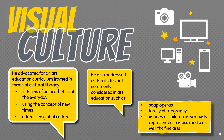As a result of analyzing postmodern theory, Duncan completed his visual culture framework for art education. He advocated for an art education curriculum framed in terms of cultural literacy, in terms of an aesthetics of the everyday, using the concept of new times, and that addressed global culture. In addition, he addressed cultural sites not commonly considered in art education, such as soap operas, family photography, and images of children — as variously represented in mass media as well as the fine arts — as innocence, as knowing adults, as victims of abuse, as perpetrators of evil, as learners, as consumers, as aesthetic, and most disturbingly, as erotic.